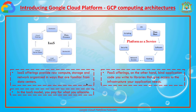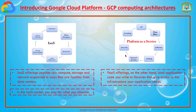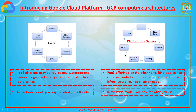Now, if you fulfill both, you can just focus on your application logic. In the infrastructure as a service model, you pay for what you allocate. For example, if you are allocated data centers, you pay for data centers; if you are allocated cloud hosting, you pay for only cloud hosting. But coming to the platform as a service model, you pay for what you use.